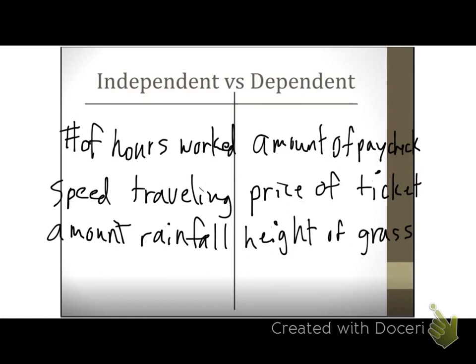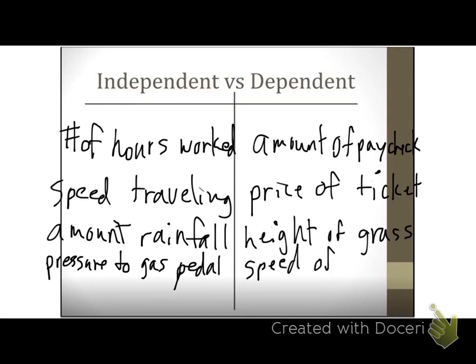You have to push the gas pedal to make the car go. If you barely push it, the car's not going to go as fast. If I push the pedal to the metal, I'm going to go really fast. So the independent variable is pressure to the gas pedal, and the dependent variable is the speed of the car. The speed of the car depends on how hard I push the gas pedal.